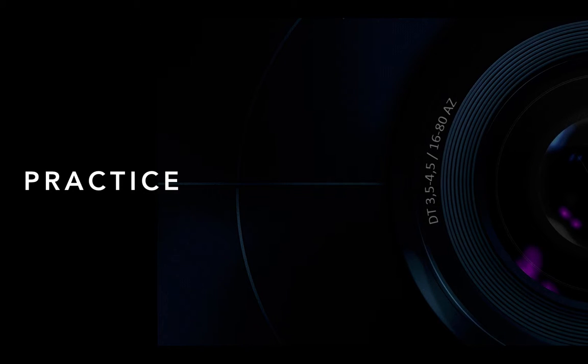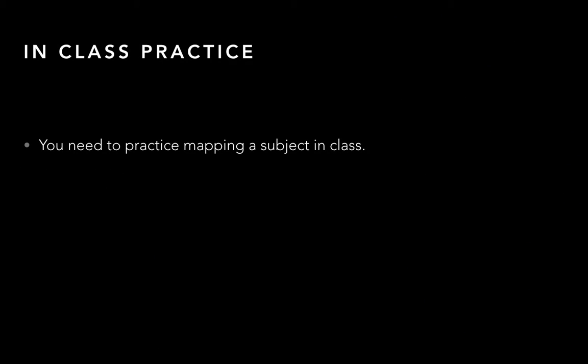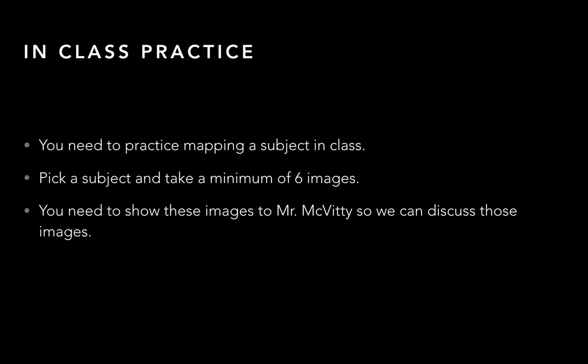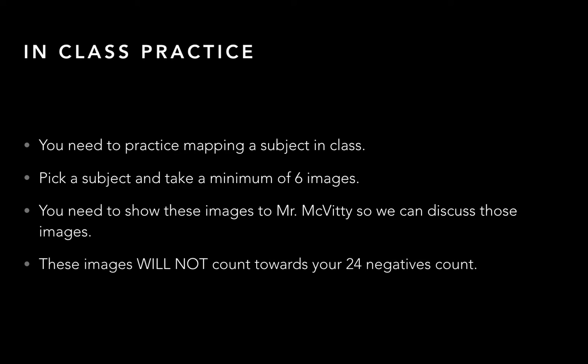What I'd like you to do today — or tomorrow if you don't have your camera — is practice mapping a subject in class. Pick whether to photograph each other or objects around the room. Pick a subject and take a minimum of six pictures from different angles and different elevations. You'll show these images to me so we can discuss them and make sure you're on the right track before you go get your negatives. These images will not count toward your 24 negative count, and I do not want to see these in-school objects in your final portfolio.